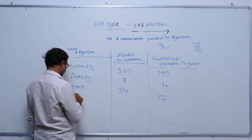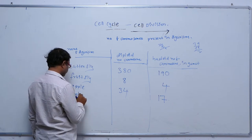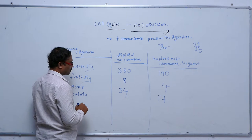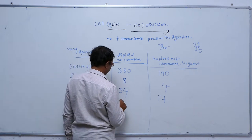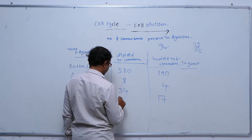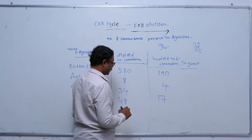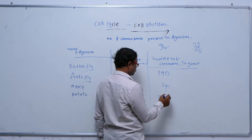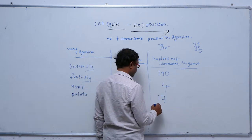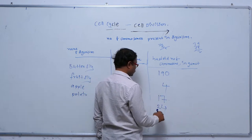In potato, the diploid number of chromosomes is 48, and the haploid number of chromosomes in each gamete is 24.